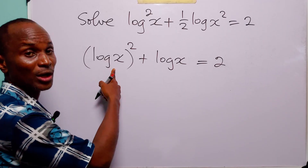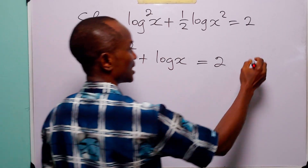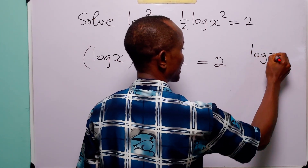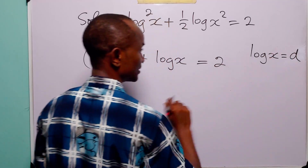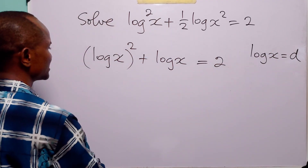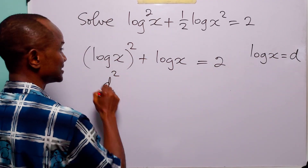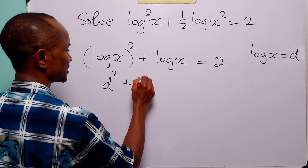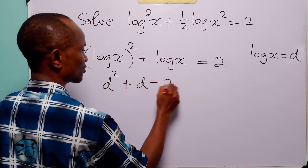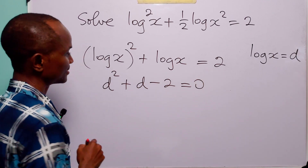Now you can see that we have log x and log x. So let log x be equal to d. With this substitution, this equation becomes d squared plus d minus 2 is equal to 0.